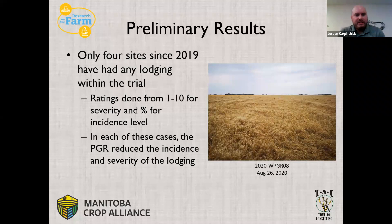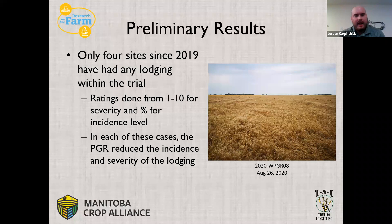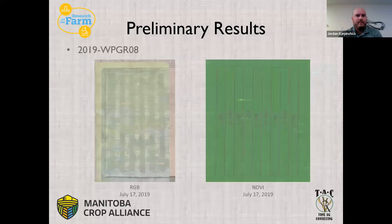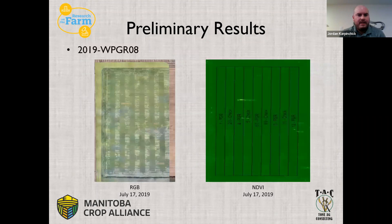Lodging is where the strong point of these products really lies — when you have high fertility combined with a higher seeding rate and the potential for heavy moisture, especially at head emergence and flowering. We've only had four sites since 2019 that have had any significant lodging in the trial. Lodging ratings go from 1 to 10 for severity and are rated on percent incidence level. In the four cases where we did see lodging, the PGR definitely reduced the incidence and severity.